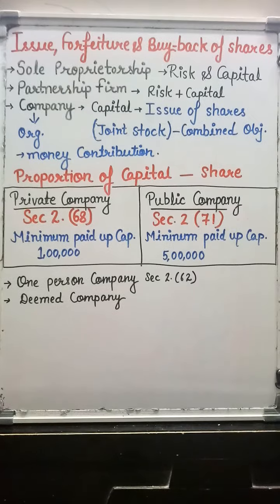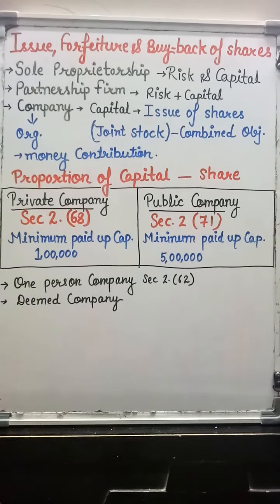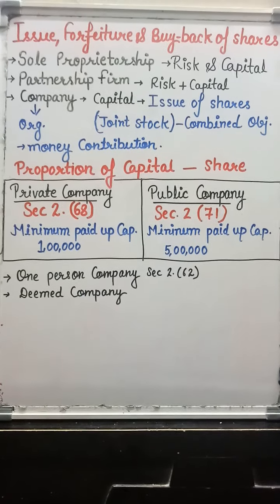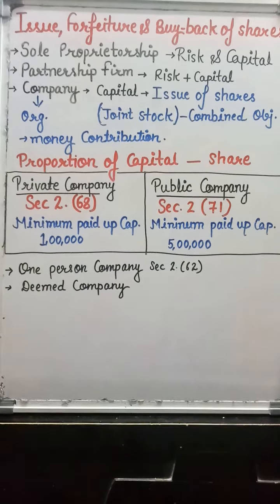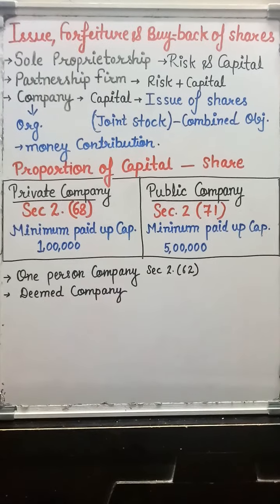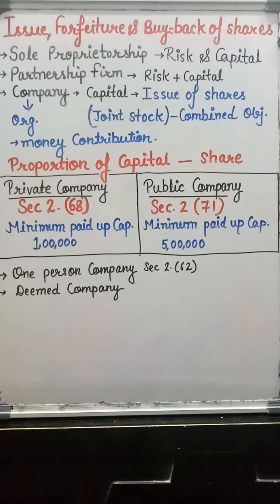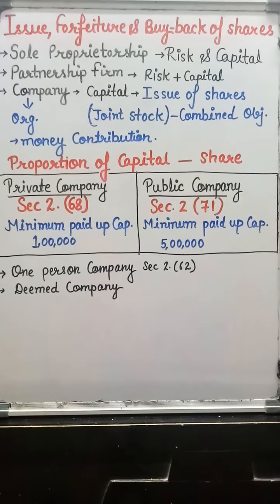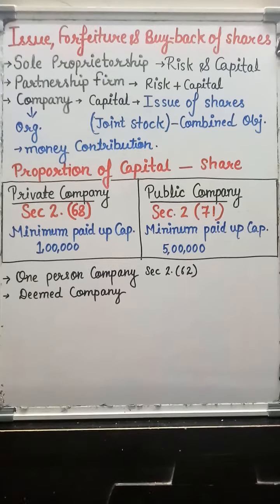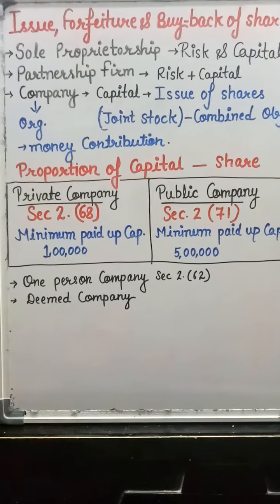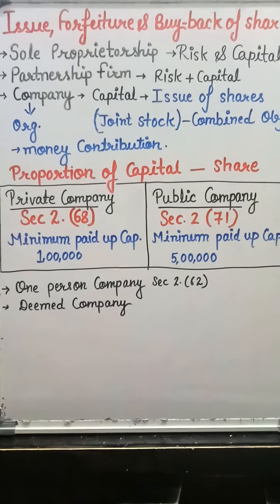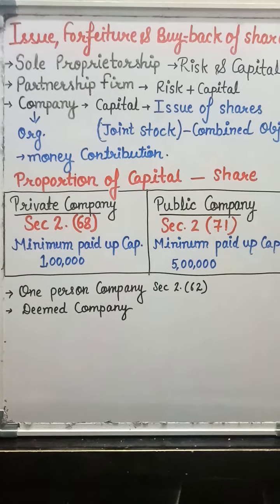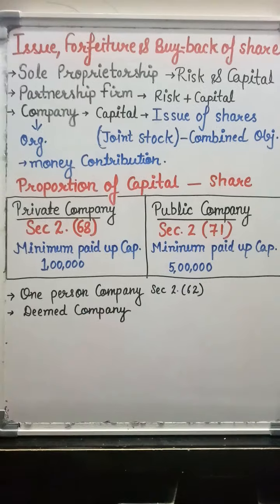To summarize: there are two types of companies — private company and public company. Private company has a minimum paid-up capital of rupees 1 lakh and public company has a minimum paid-up capital of rupees 5 lakh. A company which is not a private company is automatically a public company. A private company restricts the transfer of shares.